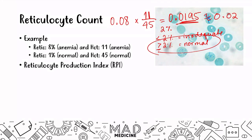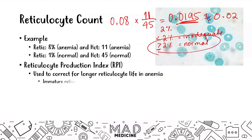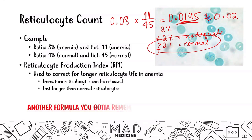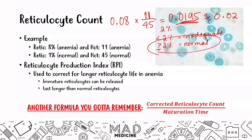When it comes to reticulocytes, you also need to know the reticulocyte production index (RPI). This is used to correct for longer reticulocyte life in anemia. Immature reticulocytes that are released have a longer life and they last longer than normal reticulocytes. Once you do the corrected reticulocyte count, you divide that by the maturation time and that will give you your RPI. This is lower yield than the corrected reticulocyte count, so more so you should focus on the corrected reticulocyte count.